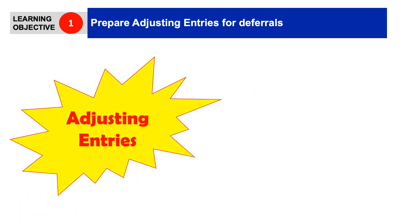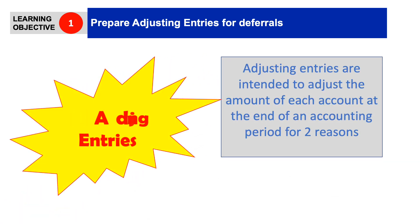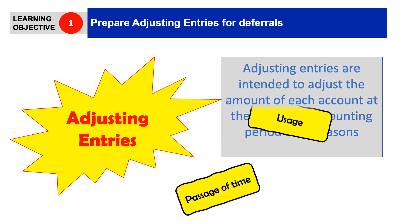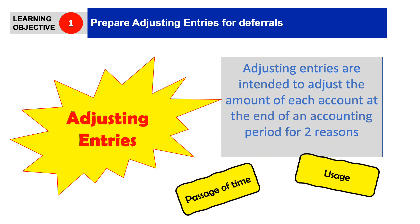Adjusting entries are the journal entries we post at the end of each accounting period to bring our books into alignment with the accrual basis of accounting. We do this process for two reasons: the passage of time and the usage.